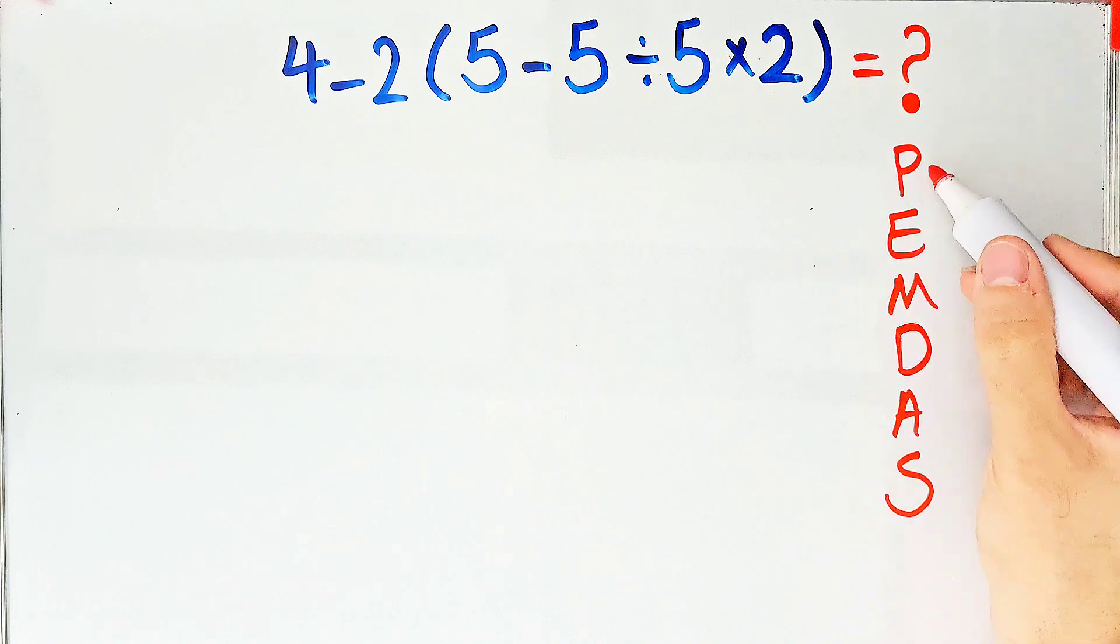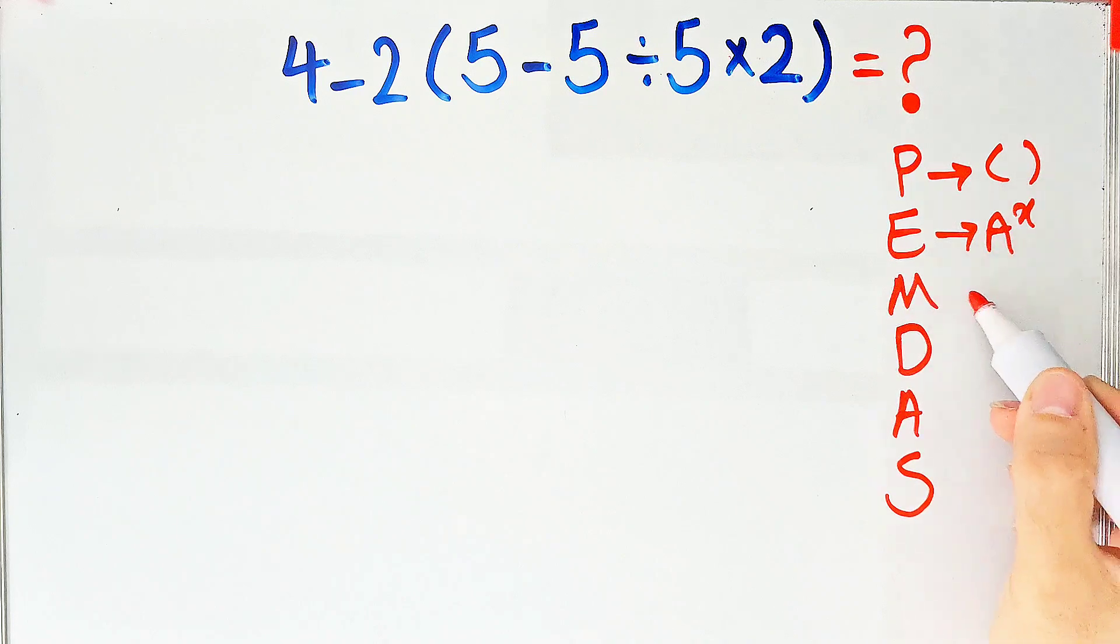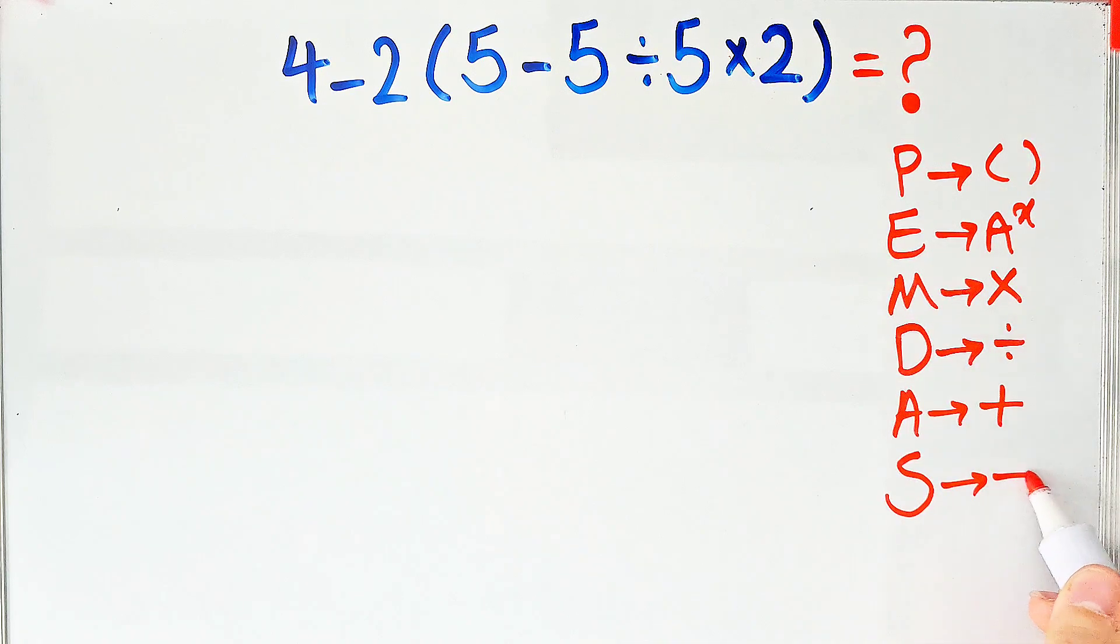In this rule, P stands for parenthesis, E stands for exponent, M stands for multiplication, D stands for division, A stands for addition, and S stands for subtraction.